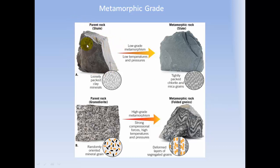Here's a parent rock of shale, a sedimentary rock. In low-grade metamorphism of low temperature and pressure, it can become slate, which has tightly packed grains. It also becomes more dense.